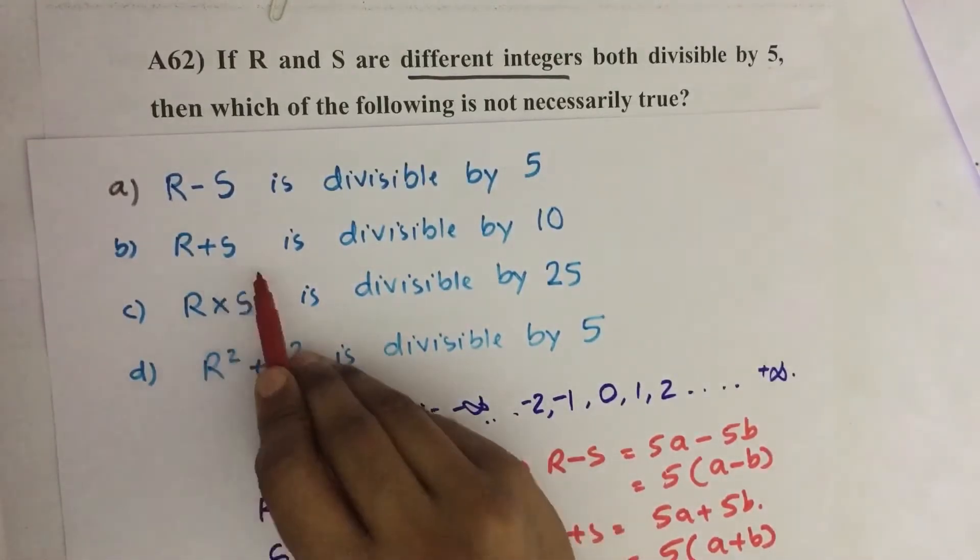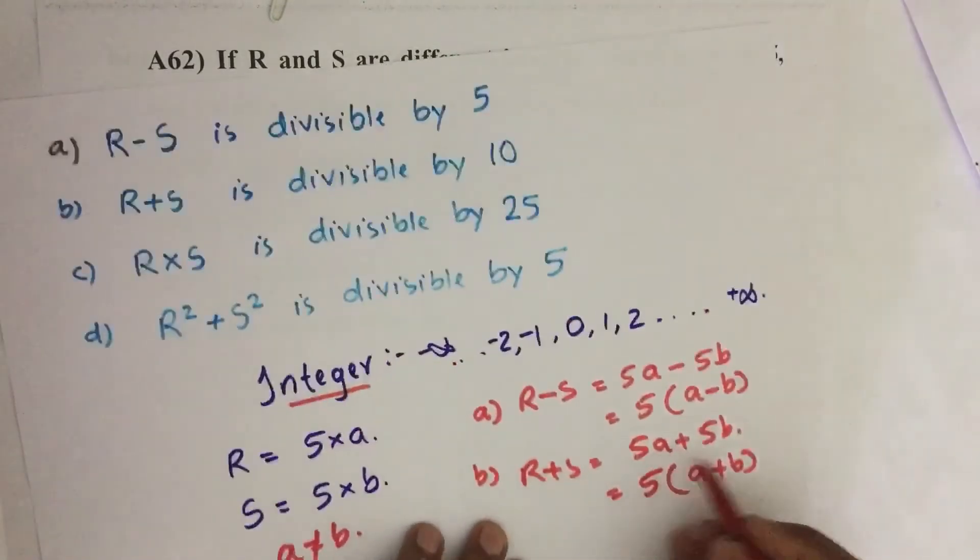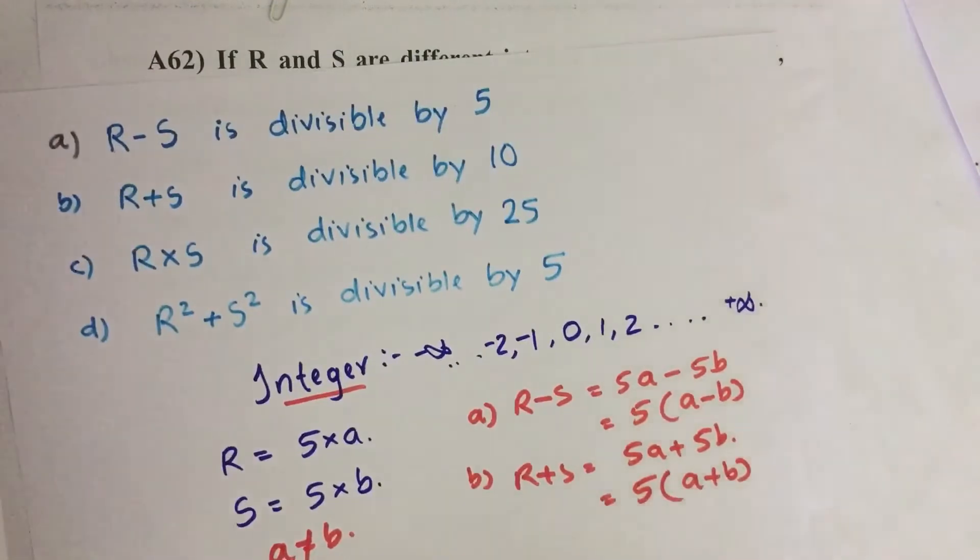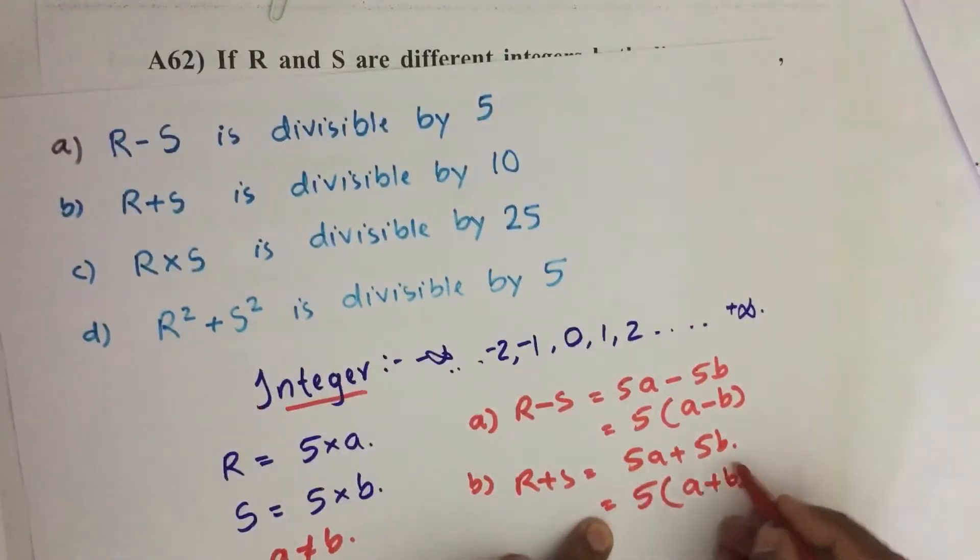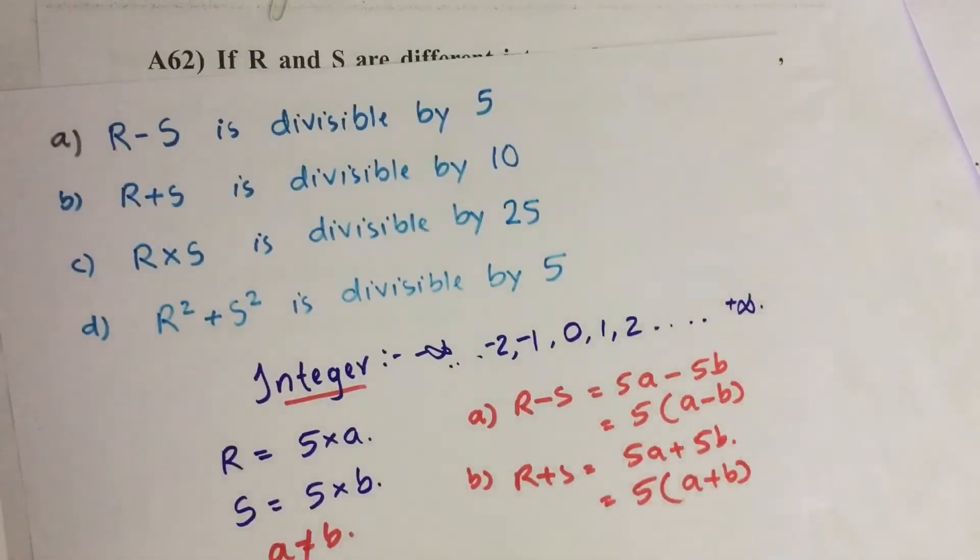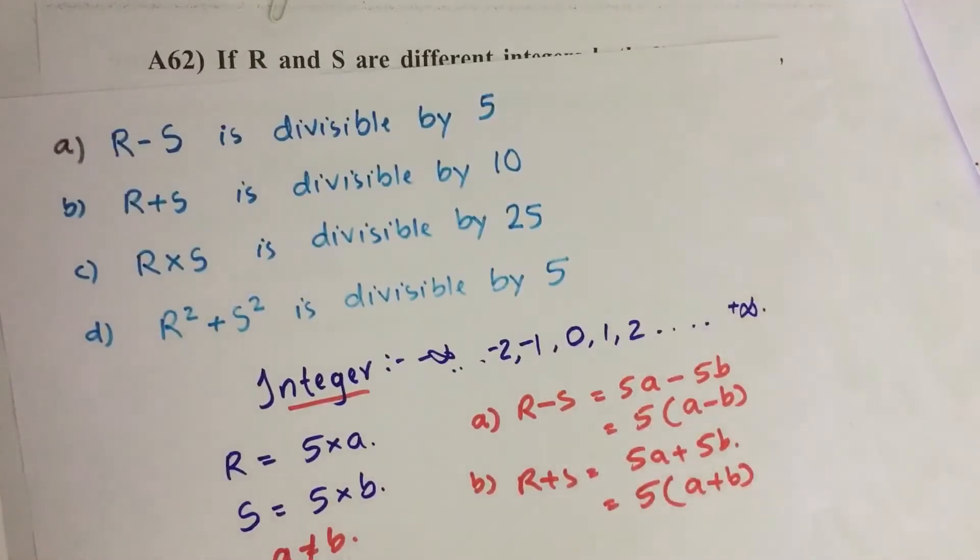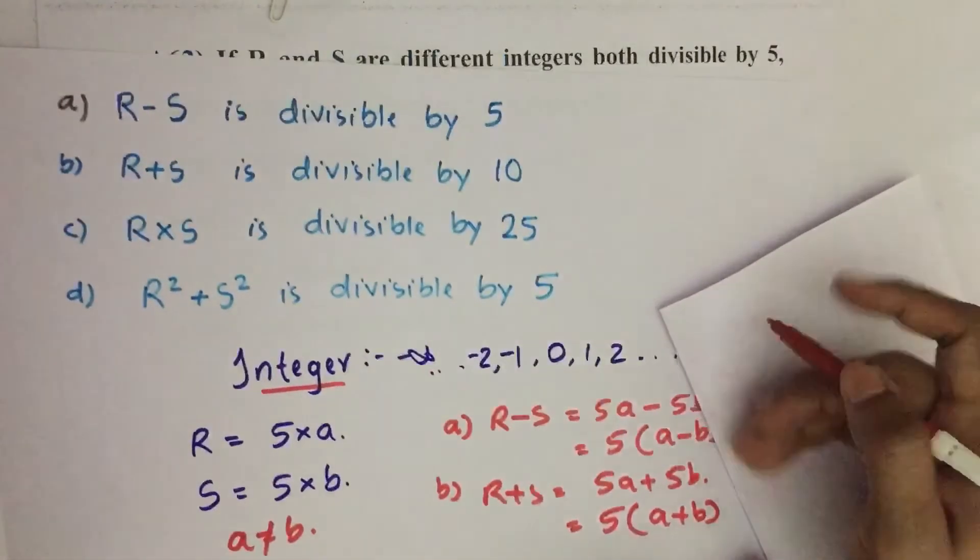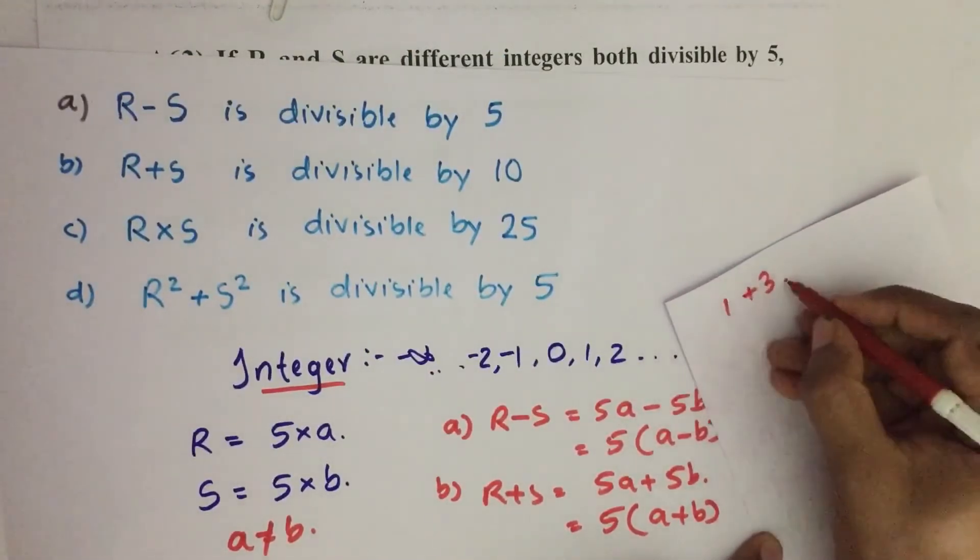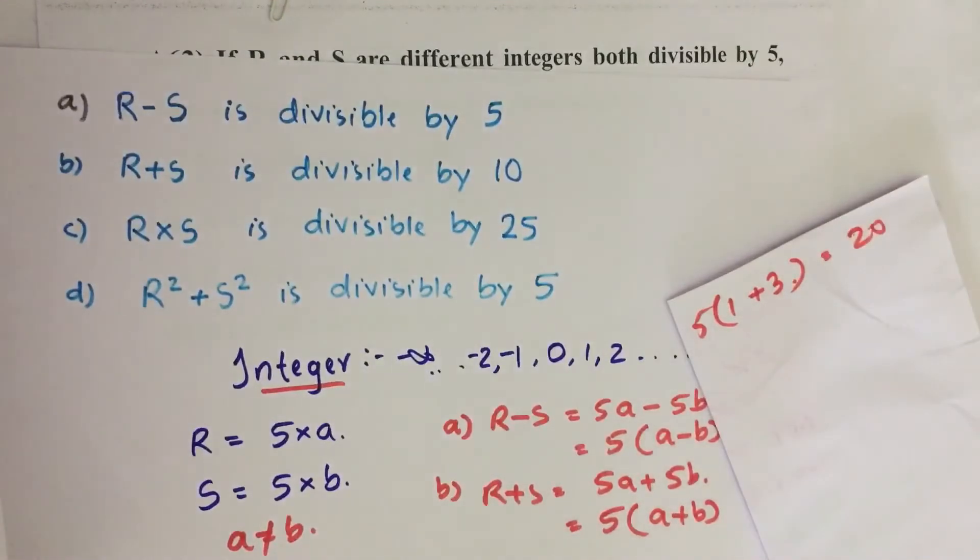Second statement: R plus S is divisible by 10. Then 5A plus 5B equals 5 into A plus B. We can give different values to A plus B, and we know 5 is not exactly divisible by 10. When is this number exactly divisible by 10? If A plus B equal to an even number, this R plus S becomes divisible by 10. For example, I am considering A equals 1, B equals 3, then 3 plus 1 equals 4. 5 into 4 equals 20, and 20 is exactly divisible by 10.